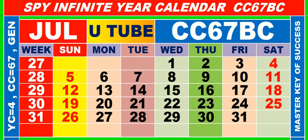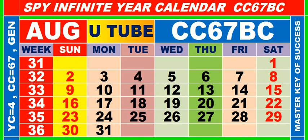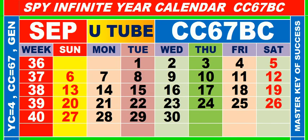Calendar for the month of July, having calendar code equal to 67. Calendar for the month of August, having calendar code equal to 67. Calendar for the month of September, having calendar code equal to 67.